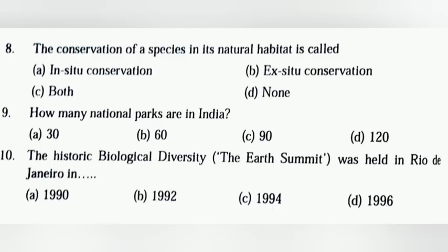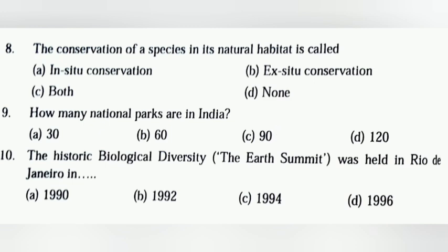The conservation of a species in its natural habitat is called in-situ conservation, as opposed to ex-situ conservation. How many national parks are in India — 30, 60, 90, or 120? Also, the historic Biological Diversity summit was held in 1992, which is an important one-mark multiple choice question.